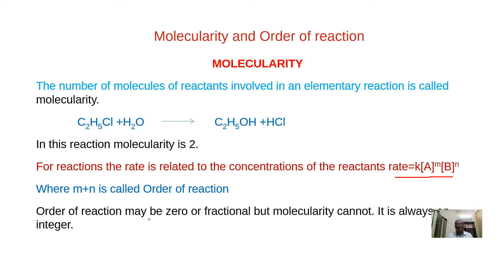The order of reaction may be zero, fractional, or an integer. But molecularity cannot be zero or fractional, because it represents the number of molecules reacting in an elementary reaction. Saying molecularity is zero means there are no reactants — that is meaningless. Half a molecule or three-fourths of a molecule does not exist, so molecularity is always an integer.